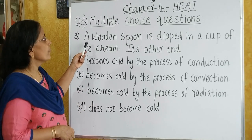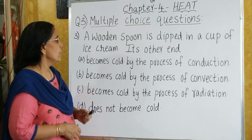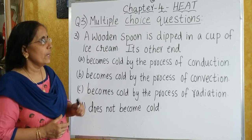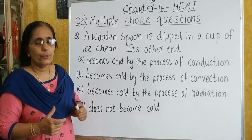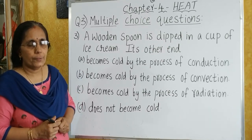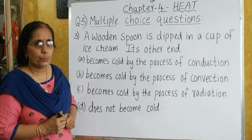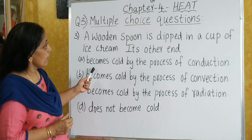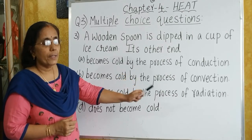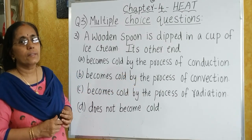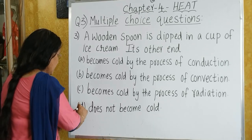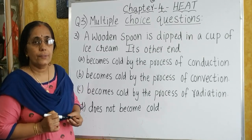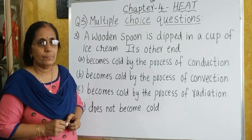Question number 3: a wooden spoon is dipped in a cup of ice cream — its other end? To solve this question, we have to think about the properties of wood. Wood is a bad conductor of heat; it does not allow heat to pass through it. So if it is dipped in ice cream, it will not become cold. Wood is a bad conductor of heat and will not allow heat to transfer through it.